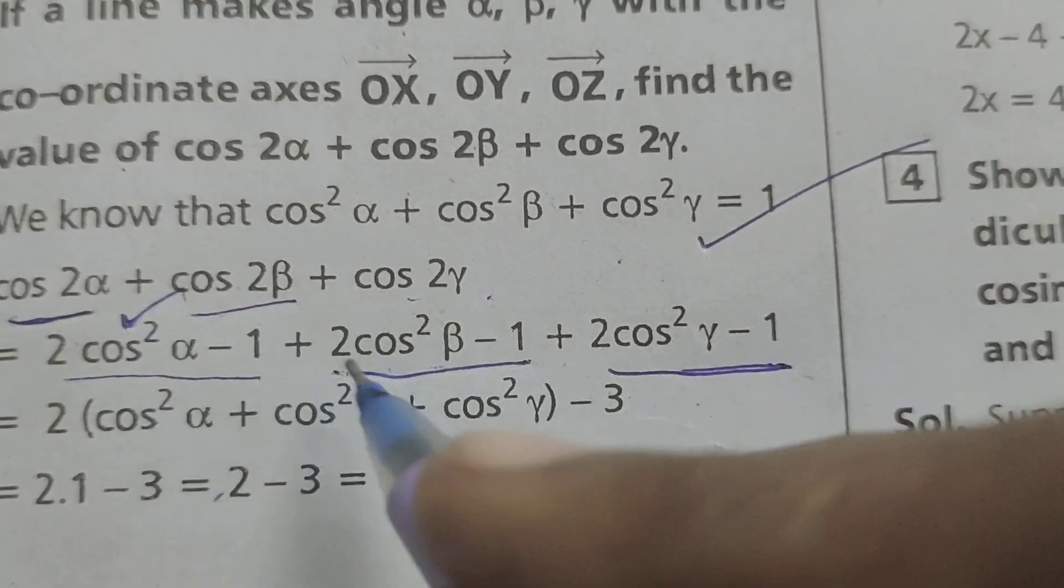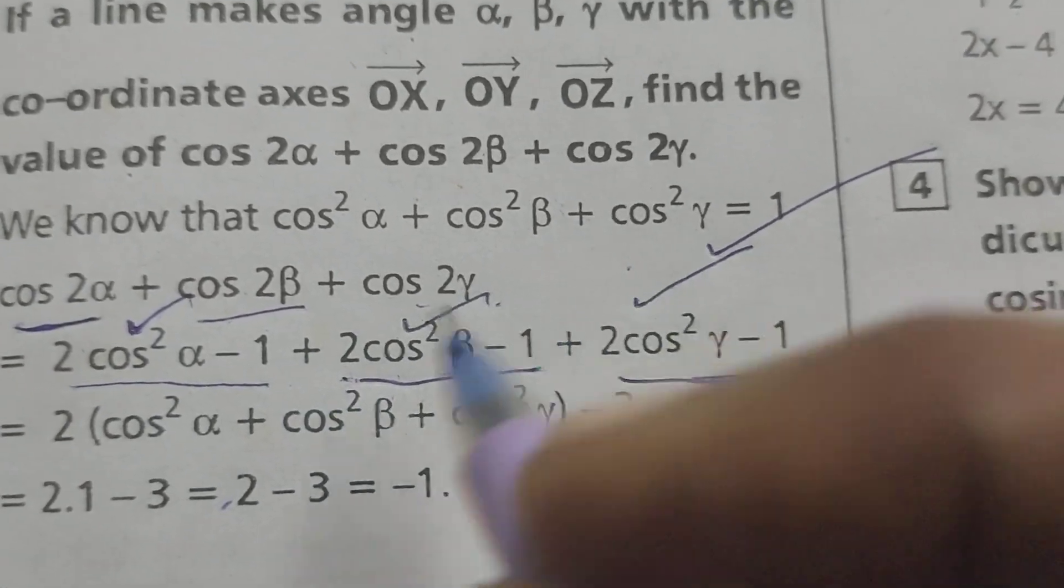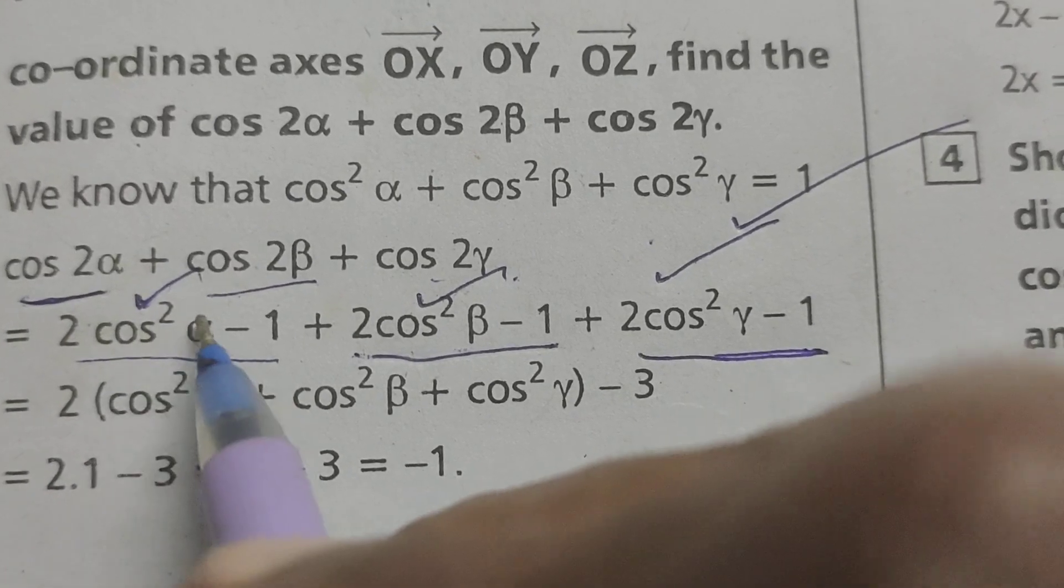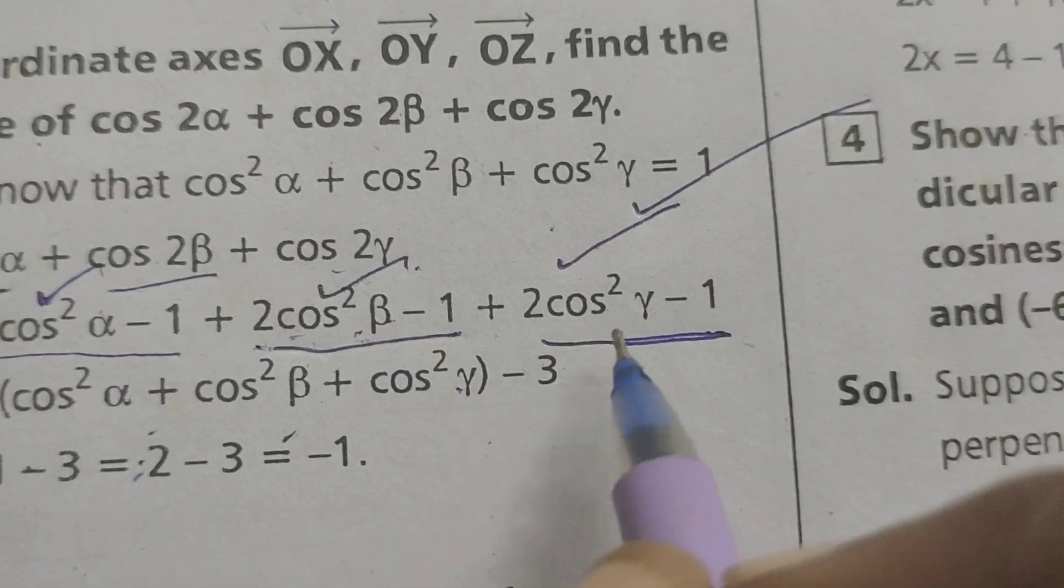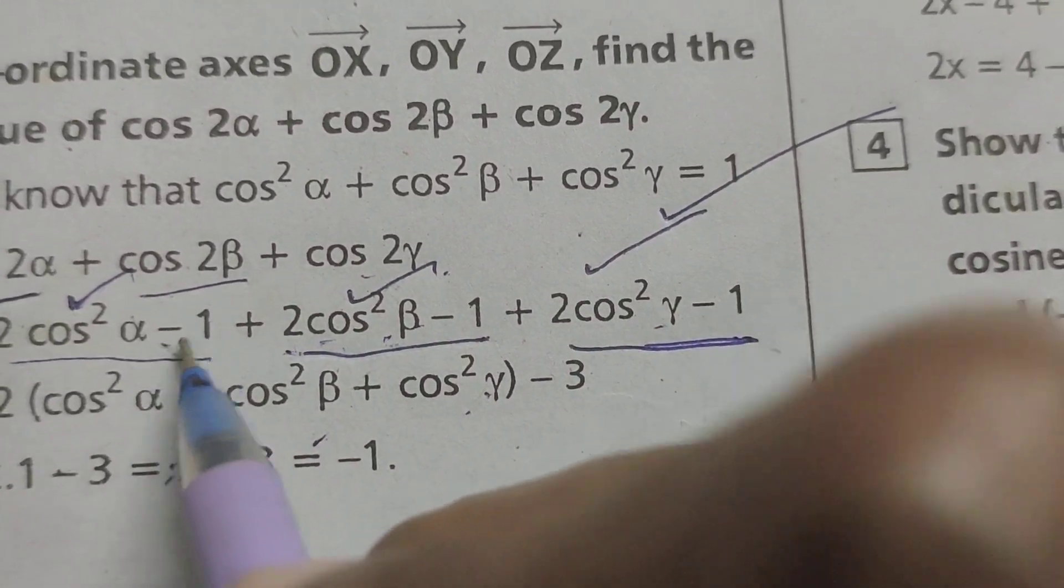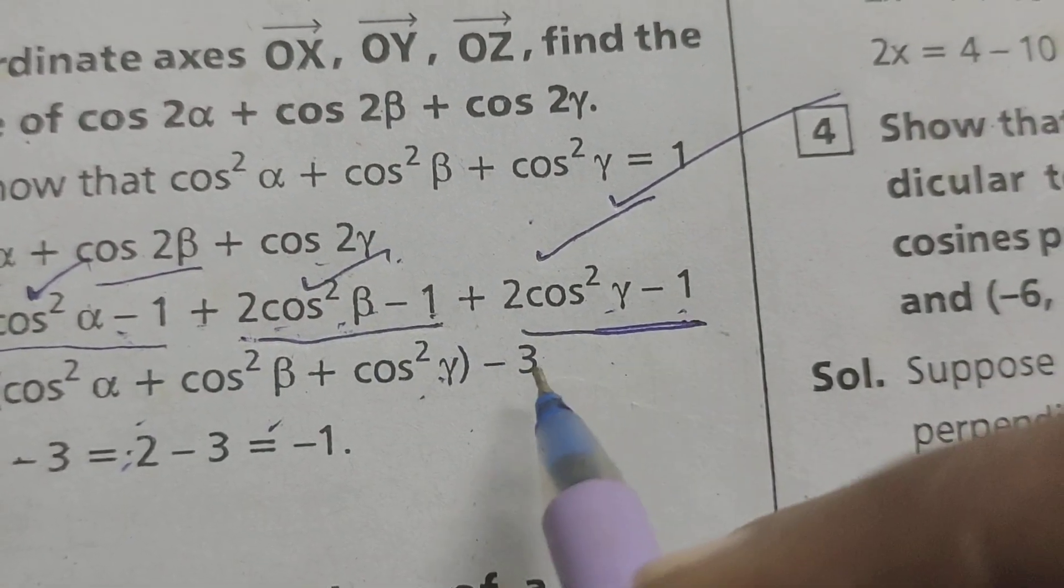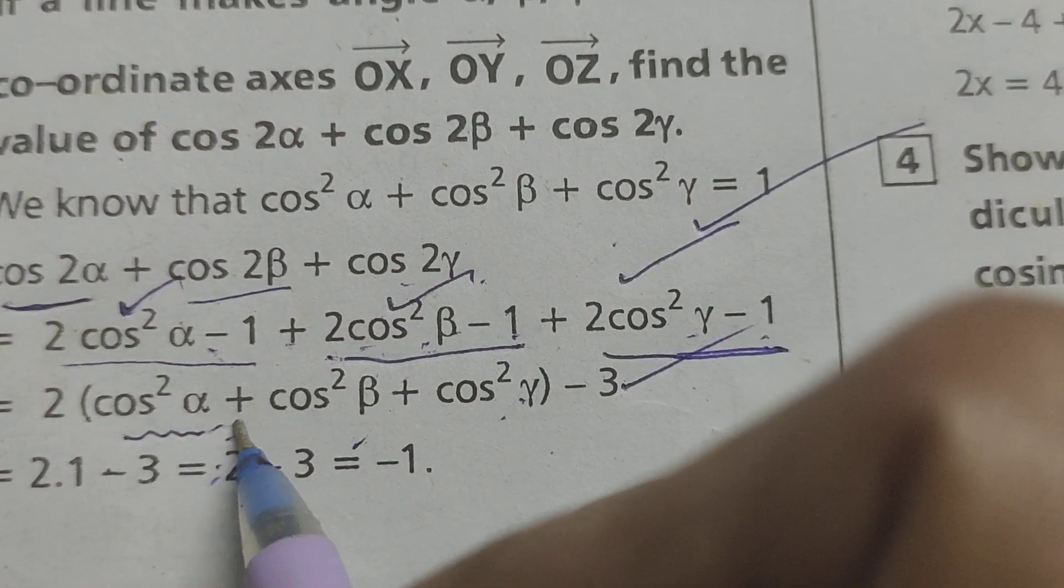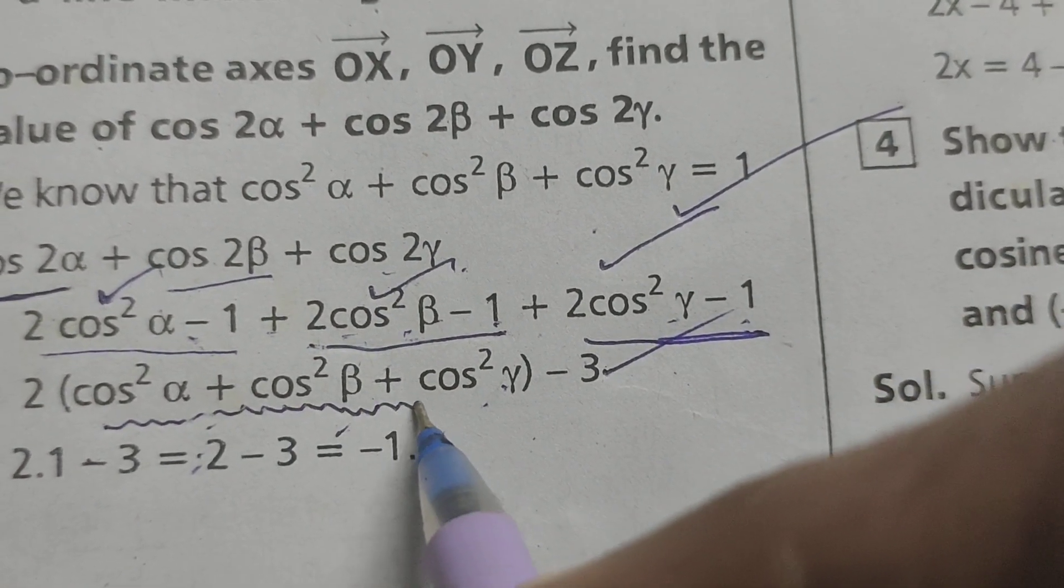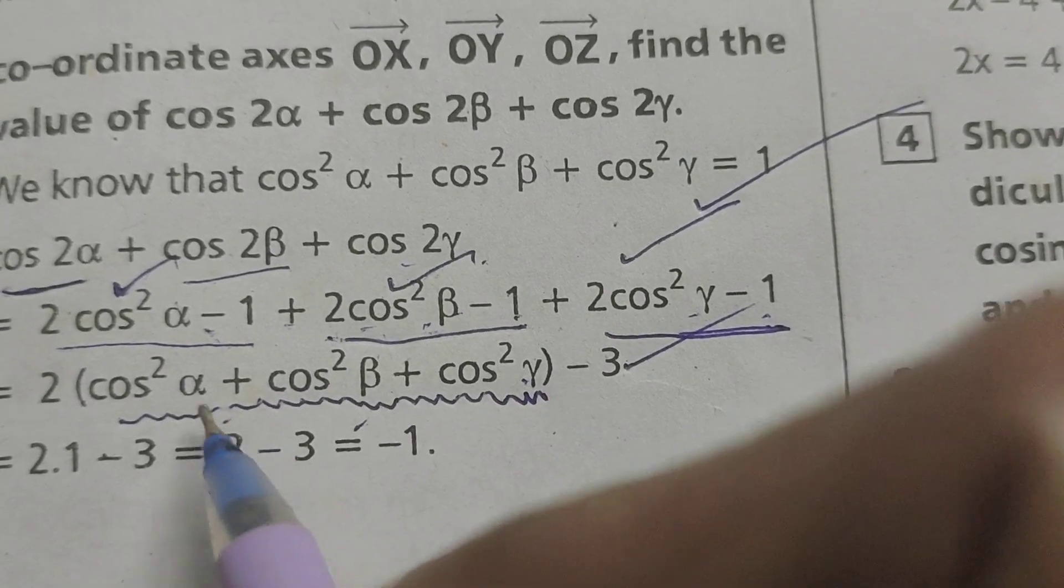In these three terms, 2 is the common factor. 2 into (cos²α + cos²β + cos²γ) minus 1 minus 1 minus 1, that is minus 3. Here already we know that cos²α + cos²β + cos²γ means 1.